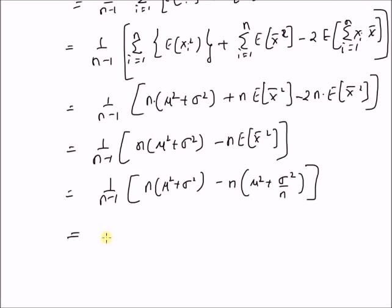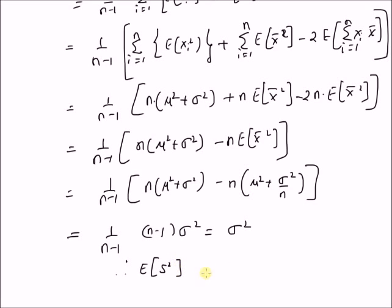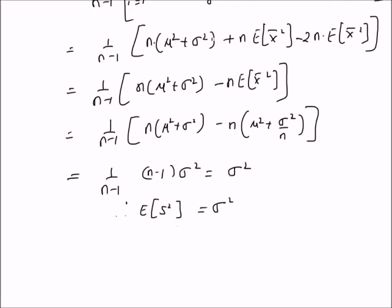This is equal to 1 by n minus 1, and we have n mu squared minus n mu squared, which cancel each other, and then we have n times sigma squared minus sigma squared. So this is n minus 1 times sigma squared, which is equal to sigma squared. Therefore, expectation of s squared — that is, the sample variance — is equal to sigma squared. Therefore, the sample variance defined as 1 by n minus 1, summation i equal to 1 to n of x_i minus the sample mean whole square, is an unbiased estimator.